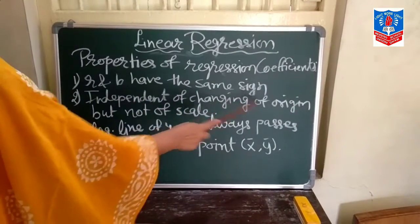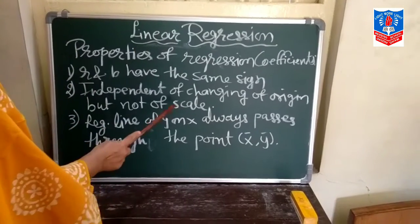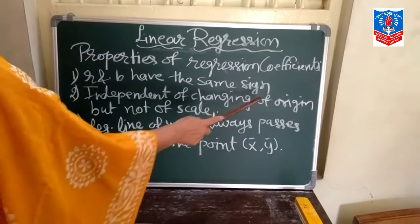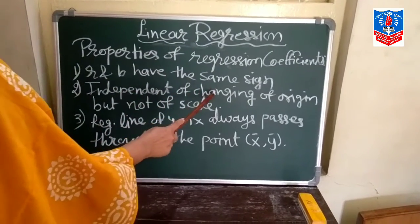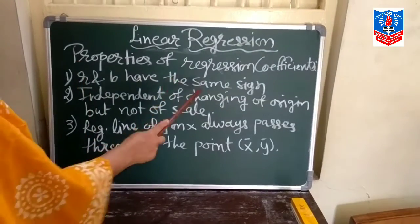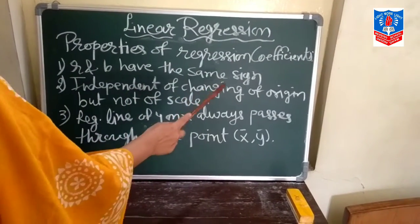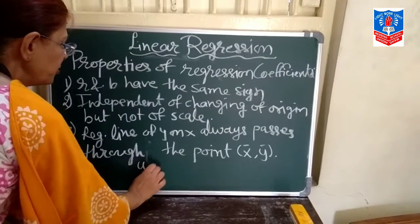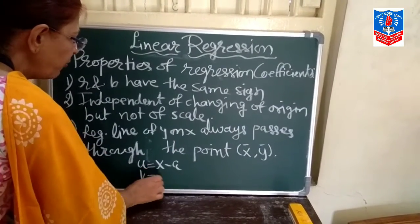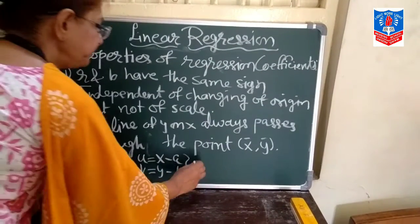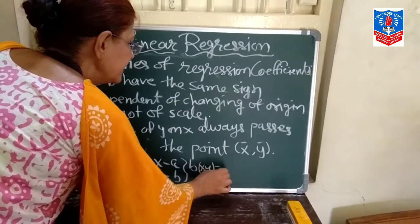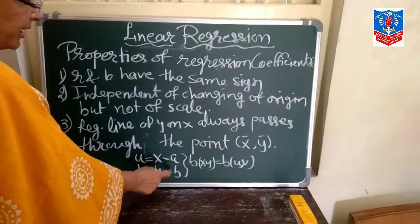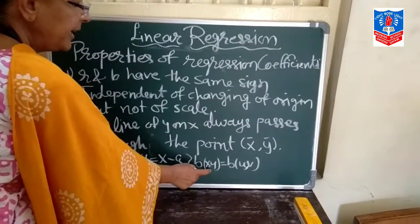Second property: regression coefficient is independent of changing of origin but not of scale. If you remember, the same property was there in correlation coefficient, except there it was free from both changing of origin as well as scale. The meaning of independent of origin is that when we solve a sum using the shortcut method, where U = X minus A and V = Y minus B, in that case B_XY equals B_UV. When you add or subtract a constant, the value of B remains the same.